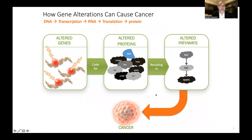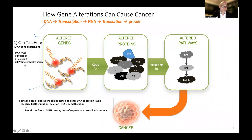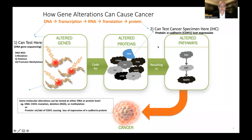Looking back at the central dogma of biology, DNA is transcribed to RNA and translated to protein, and alterations in DNA have consequences for protein function. In some cases, molecular alterations can be tested at either the DNA level or the protein level, and CDH1 and E-cadherin are an example. We can sequence DNA from the cancer to assess for problems in CDH1, or we can perform immunohistochemistry on the sample to look for protein expression — which would show E-cadherin loss in diffuse-type gastric cancer caused by CDH1 alteration.